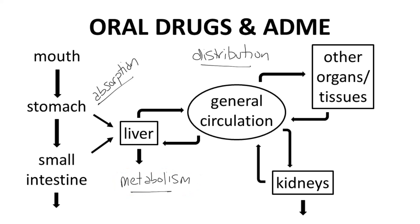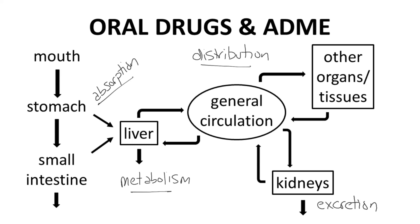The drug will sometimes pass through the kidneys, where it may be filtered and excreted — specifically renal excretion. Excretion is the E in ADME. With each pass through the kidneys, more drug may be excreted and the plasma concentration will be reduced.